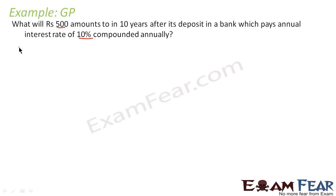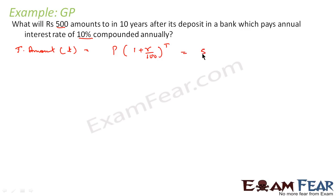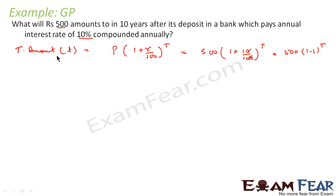We know the formula: the total amount after year t is nothing but the principal amount times (1 + rate/100)^t. So if we put P = 500 and r = 10, we get 500 × (1 + 10/100)^t, which is 500 × (1.1)^t.